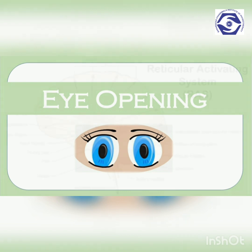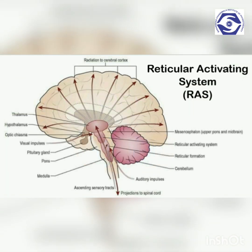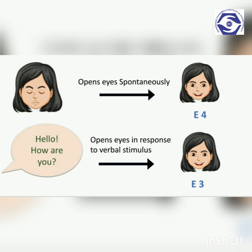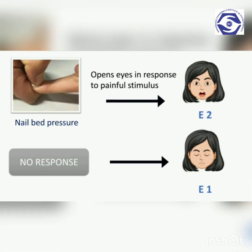Eye opening is the first parameter on the GCS. This assesses the integrity of the reticular activating system, concerned with the arousal of the brain in sleep and wakefulness. The patient scores a 4 if they open their eyes spontaneously when approached, implying the arousal response is active. A score of 3 is given if eyes open only to verbal stimulus such as when their name is called. A score of 2 is given if eyes open only to painful stimulus, applied by pressing on the nail bed for about 15 seconds. If no response is elicited, indicating deep depression of the arousal system, the patient scores a 1.